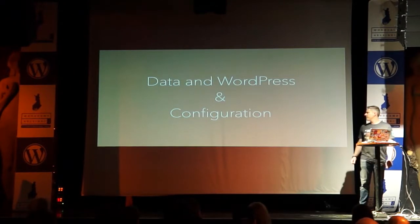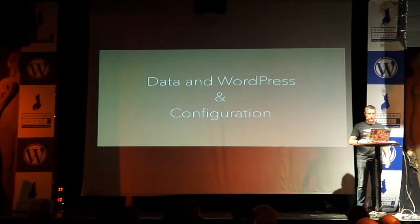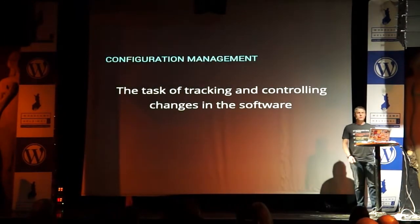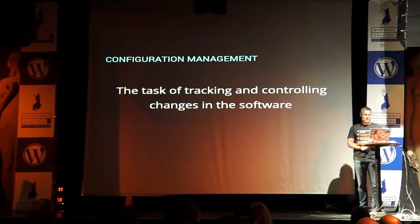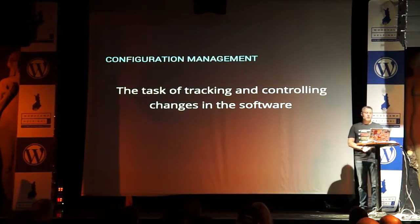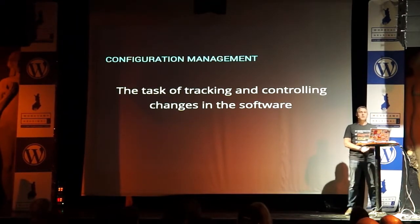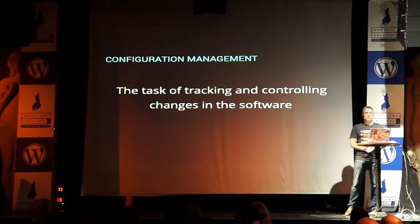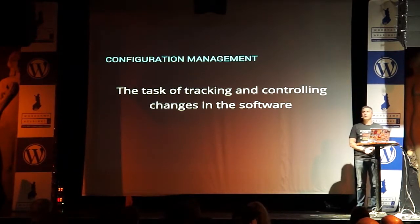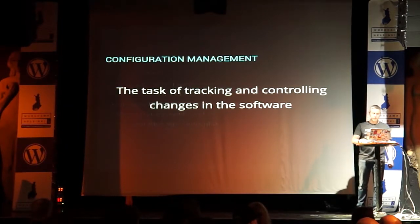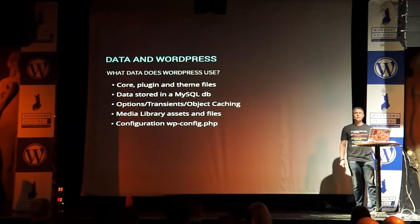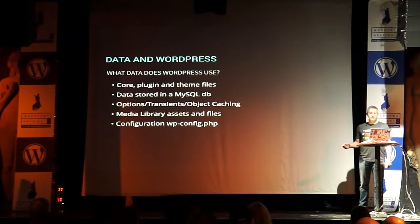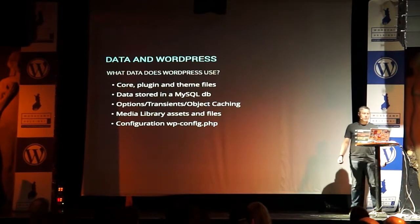Let's get into data and WordPress — the types of data that WordPress has and configuration. I looked up the definition of configuration management on Wikipedia: it gives me the task of tracking and controlling changes in the software. Today I want to focus on controlling changes rather than the tracking. WordPress uses several different types of data. If you're using WordPress core files, you have PHP files, JavaScript, CSS — that's your code base. All of those are files that are written to disk.